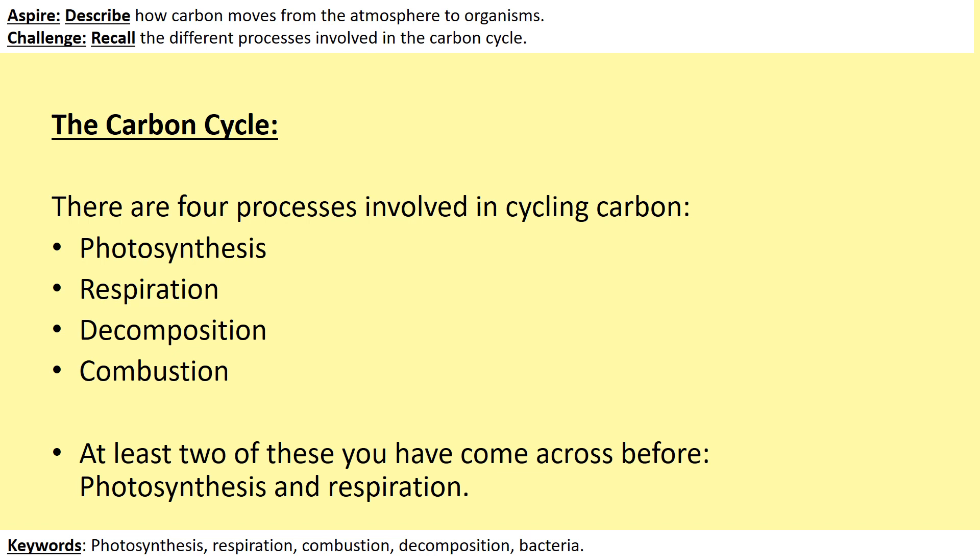So these are the four different processes in the carbon cycle: photosynthesis, respiration, decomposition, and combustion. I know that you've come across two of these before in biology — in a topic called bioenergetics, which is just a posh name for photosynthesis and respiration. So I'm just going to recap some of those processes.